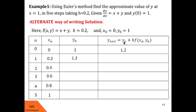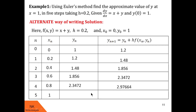Substituting y1, h, x1, and y1 into the formula and using a calculator, we get y2 = 1.48. This value is then written in the yn column for the next row. Substituting for y2, x2, and h gives y3 = 1.856. Completing the remaining calculations gives y4 and y5. So y5 = 2.97664 is the required solution of the given differential equation.